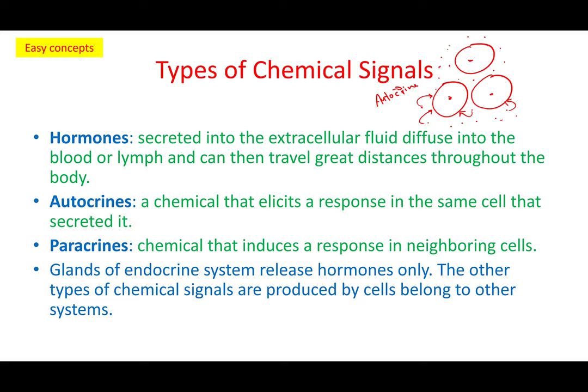Alternatively, the hormone produced by a cell can target a different cell. In that case, it is called the paracrine mechanism. So autocrine means the hormone targets the same cell that produced it, and paracrine means the hormone targets other cells.